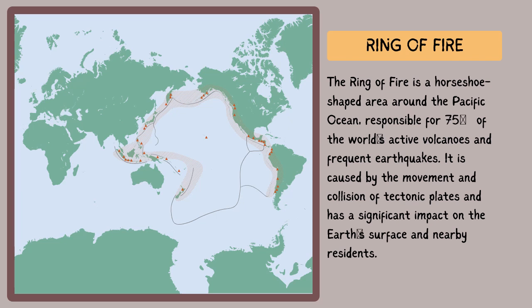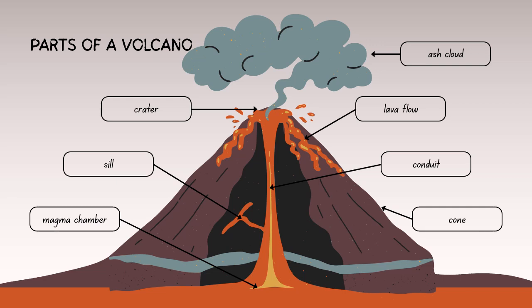Let's understand the parts of a volcano. A volcano consists of various parts, each playing a role in volcanic activity. Starting with the crater — a bowl-shaped depression at the summit of a volcano formed by previous eruptions — it is often the location of the central vent.